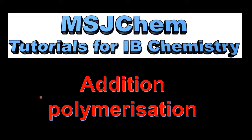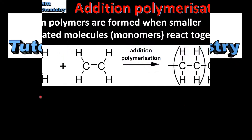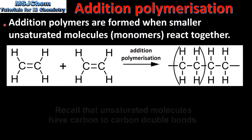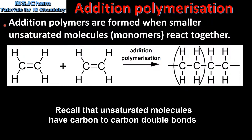This is MSJChem. In this video I'll be looking at addition polymerization. Addition polymers are formed when smaller unsaturated molecules, which are called monomers, react together.